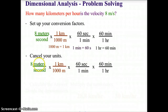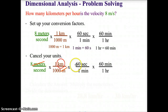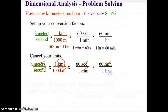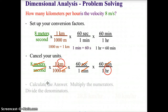We cancel our units: meters cancels with meters, leaving kilometers; seconds cancels with seconds; minutes cancels with minutes — leaving us with hours in the denominator. That gives us kilometers on top and hours on the bottom: kilometers per hour, which is exactly what we're being asked to find.